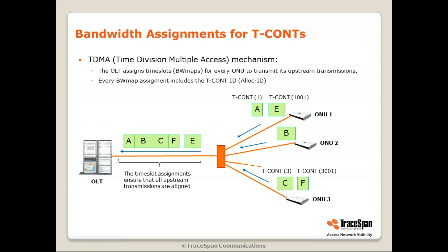When the OLT assigns a time slot, it tells ONU 1 to start transmitting — this transmission is associated with TCON 1 — beginning at a specific point (packet A) and stopping at another. Then ONU 2 with packet B starts and ends at its assigned slots, then ONU 3 with packet C. The second TCON of ONU 3 is assigned separately, so every TCON has separate assignments, and there could be gaps in between. This ensures all transmissions are aligned and there are no collisions. The dynamic bandwidth per TCON allows the OLT to enforce quality of service and optimize resource allocation.